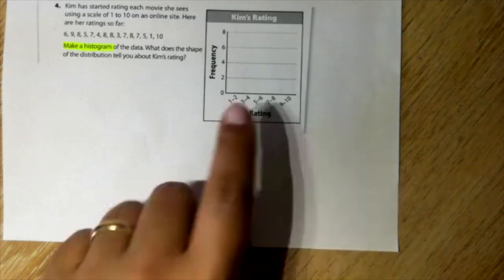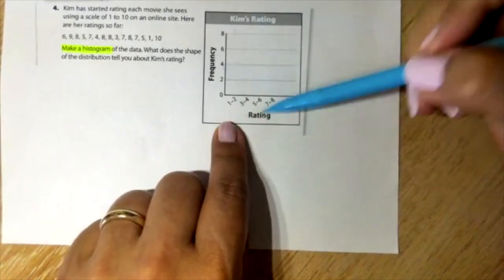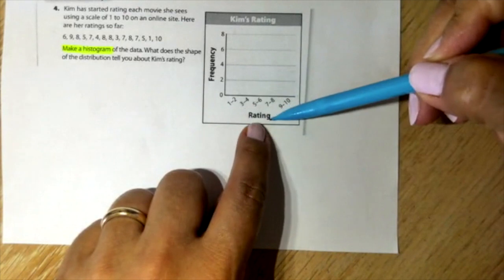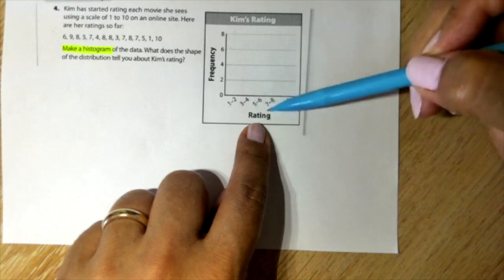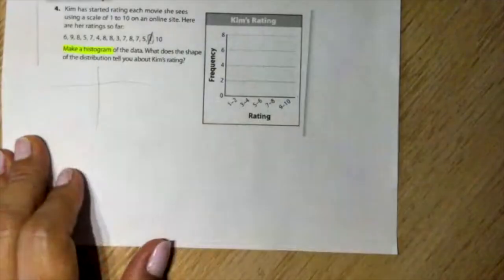Kim has started rating each movie she sees using a scale of 1 to 10 on an online site. Make a histogram of the data. What does the shape of the distribution tell you about Kim's rating? The x-axis are the ratings. These are the intervals from 1 to 2, 3 to 4. The y-axis represent the frequency.